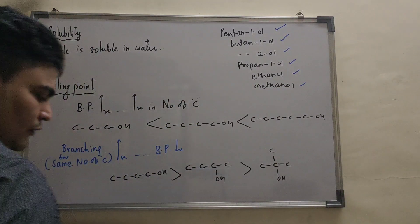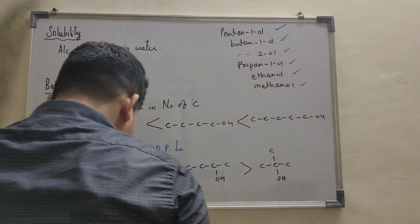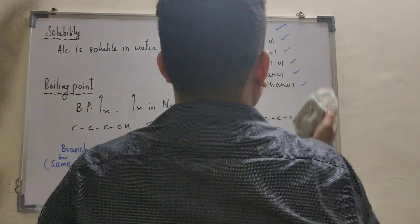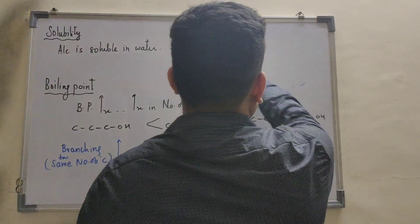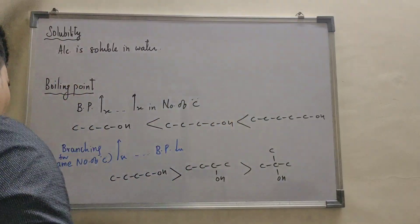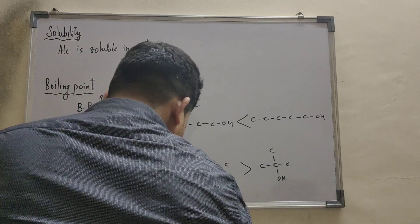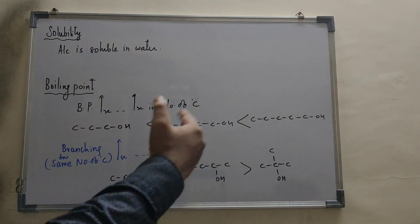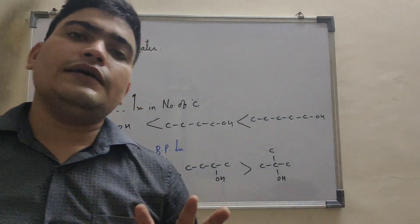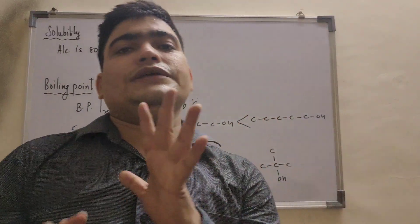Clear? Ye baat ek question dekhlo. Kya aap samaj gaye na branching wala? Barabar. To ye do main physical properties hai jo aap ko yaad rehni chahi hai. Solubility related aur dusra hai boiling points related ki in ka boiling point jo hota hai jada hota hai. So it's all from method of preparation and physical properties.